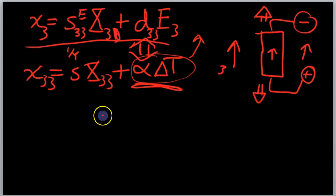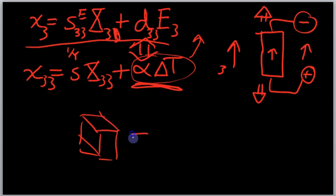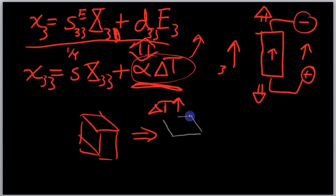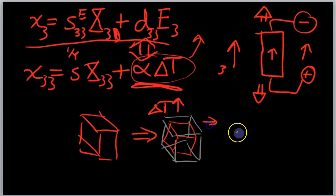The difference between thermal expansion and the converse piezoelectric effect is this: when you heat a material, generally the entire material will expand. So if you have a material like this and you increase the temperature, you're going to get a bigger material. The material will — let me exaggerate a little bit — the material will get bigger. Originally it was this size, and then it grew in all directions: in the length, the base, and the width or height — all dimensions increased.